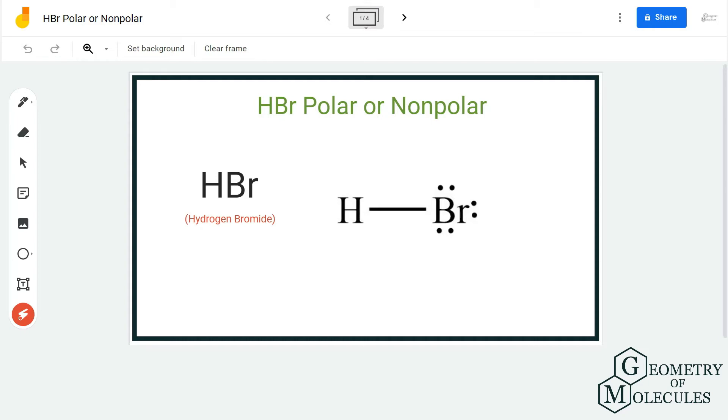To check its polarity, we are first going to look at its Lewis structure, followed by the difference of electronegativities of these atoms, and check if there is a net dipole moment in this molecule.